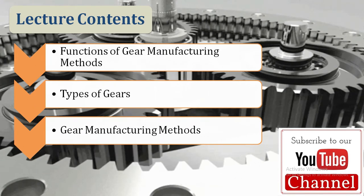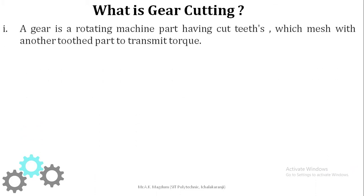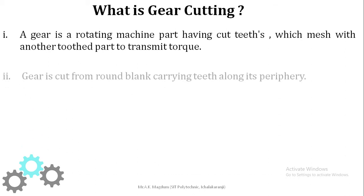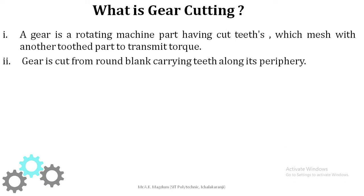First of all, what is gear cutting? A gear is a rotating machine part having cut teeth which mesh with another tooth part to transmit torque. Gear is used to transmit power from one end to another end. A gear is cut from a round blank carrying teeth along its periphery. Gear cutting is a specialized job — it is any machining process for creating a gear.